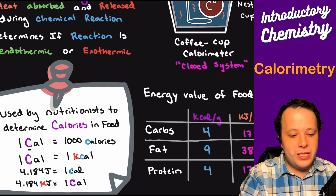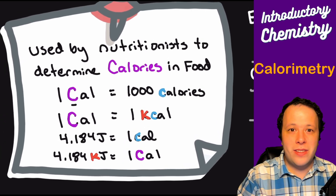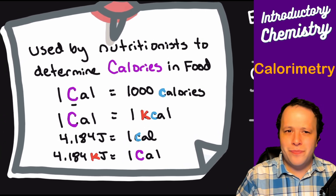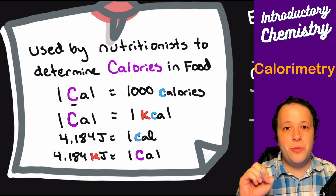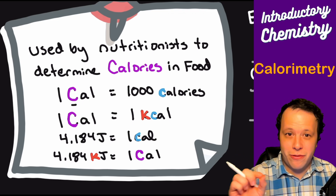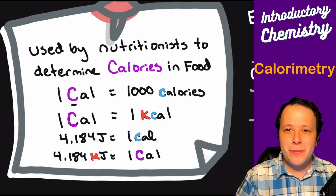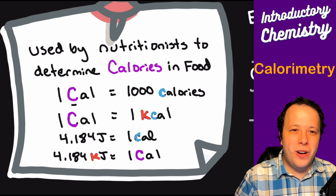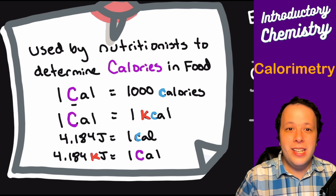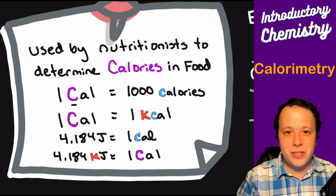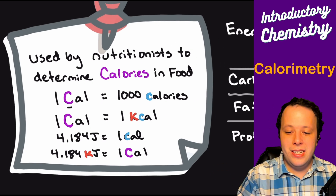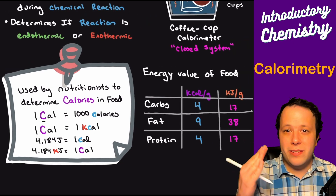Here are some useful conversions. One Calorie (big C) is equal to 1000 calories (little c) — they are different from each other. One large-C Calorie is equal to one kilocalorie and 4.184 kilojoules, which is based on the specific heat of water. One calorie (little c) equals 4.184 joules.